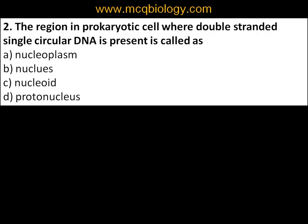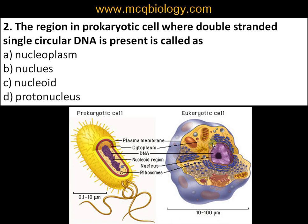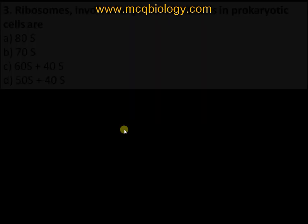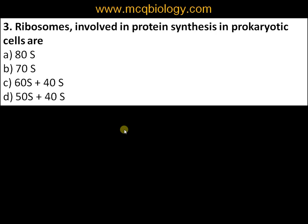Question number two: the region in a prokaryotic cell where double-stranded single-circular DNA is present is called: A) nucleoplasm, B) nucleus, C) nucleoid, D) protonucleus. Since there is no nucleus in a prokaryotic cell, the region where genetic material or DNA is present is called the nucleoid region. It is double-stranded single-circular DNA, often called the bacterial chromosome.